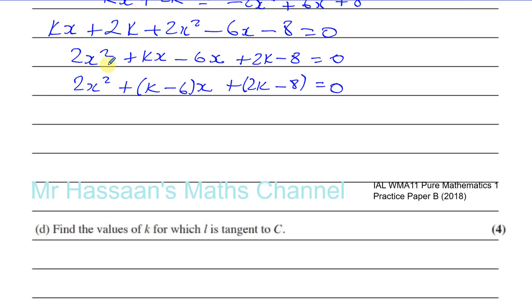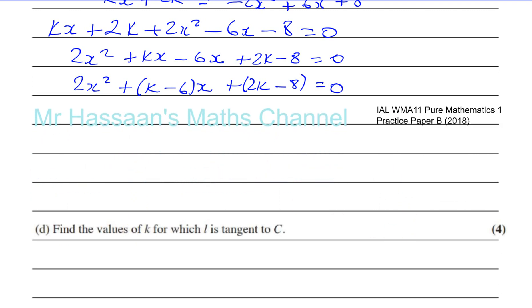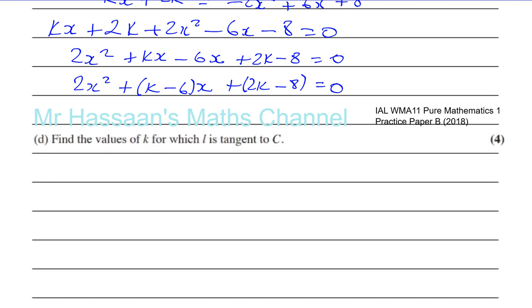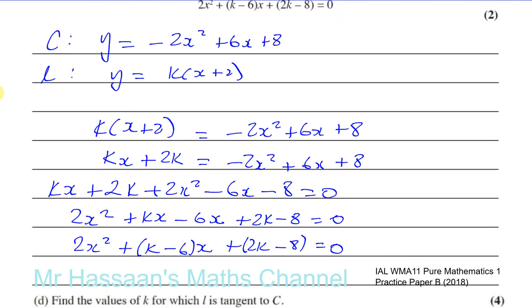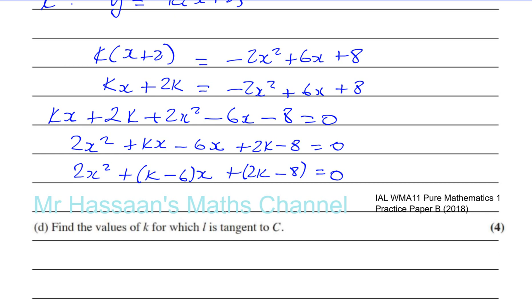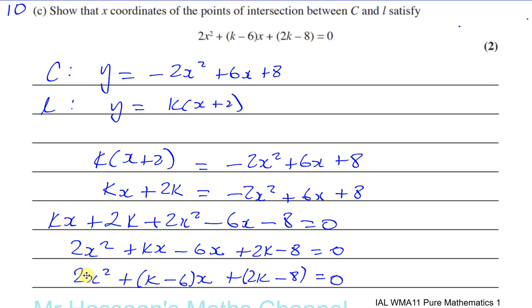And then it says part D. Find the values of k for which L is a tangent to C. So now we can see that this equation represents where the two equations meet, where the line and the curve meet. That's what this equation represents. This tells us the values of x where the two equations will meet, where the two lines will intersect.